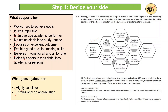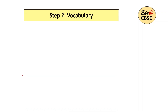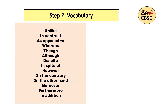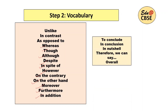Step one is clear — you've decided which side to write. Step two is vocabulary. You should know the vocabulary to use while comparing and contrasting, such as: unlike, in contrast, as opposed to, whereas, though, although, despite, in spite of, however, on the contrary, on the other hand, moreover, furthermore, in addition. For conclusions you can use: to conclude, in conclusion, in a nutshell, therefore, we can say, overall, or any other concluding word.